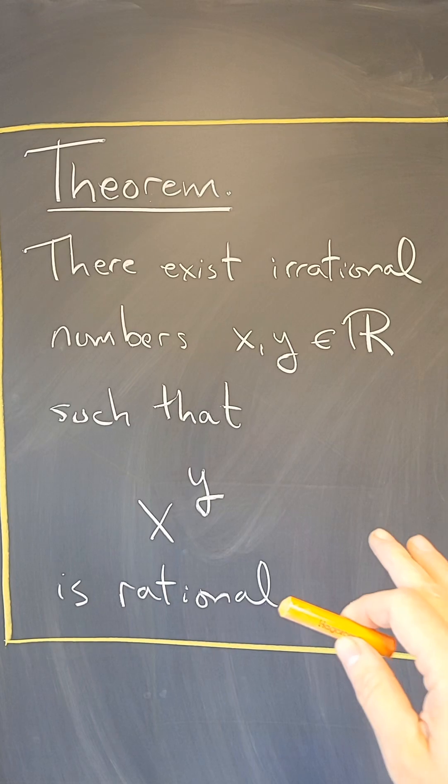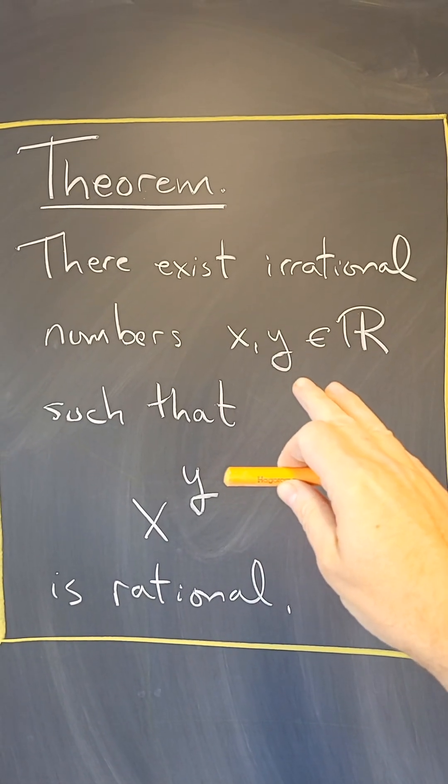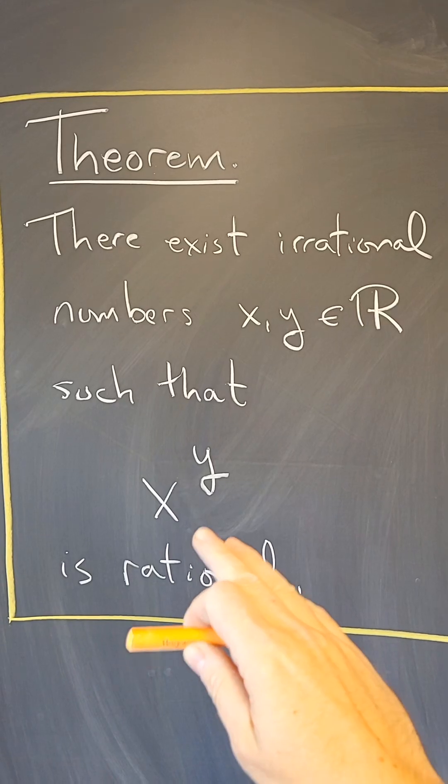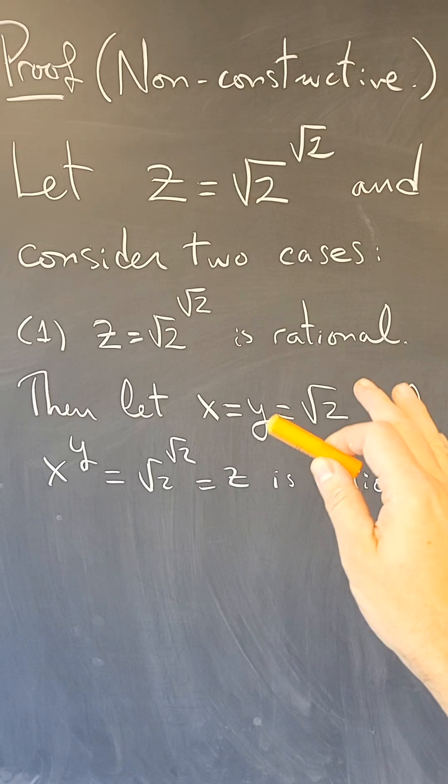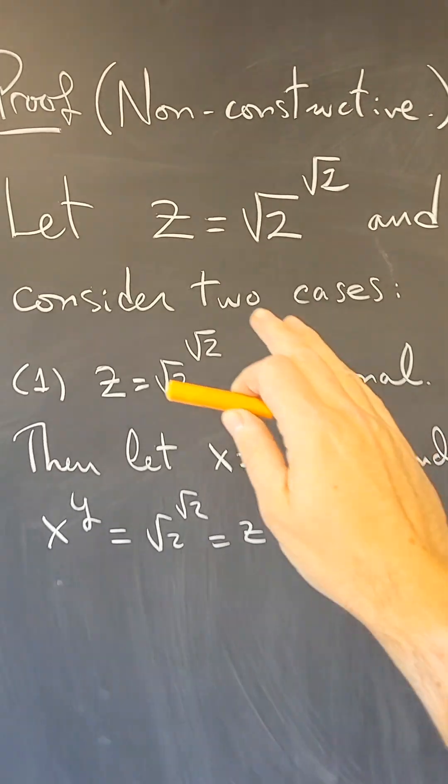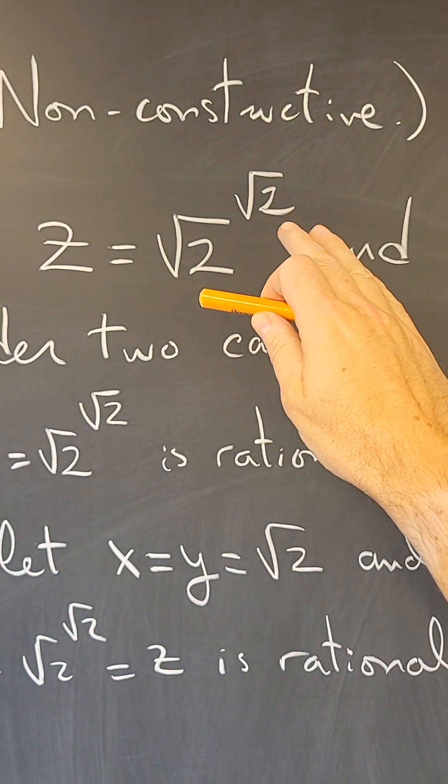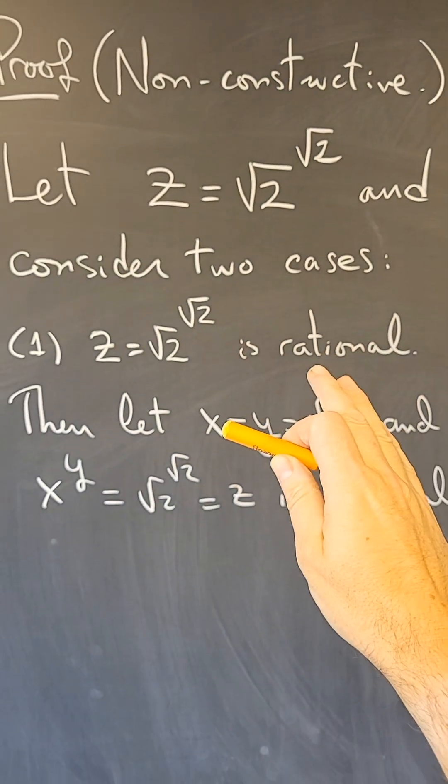So the goal is to prove that there are irrational numbers x and y such that x to the y is a rational number. So here is how the non-constructive proof goes. Let z be a square root of 2 to the square root of 2. And then there are two cases.